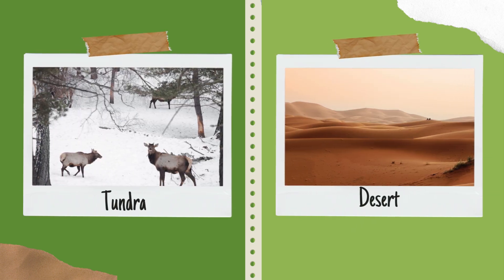Coming to the third one, tundra. In physical geography, tundra is a type of biome where tree growth is hindered by low temperatures and short growing seasons.